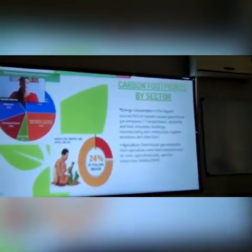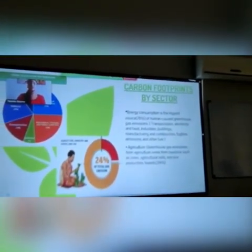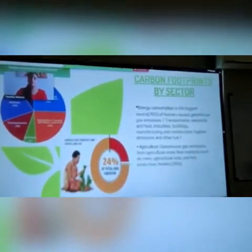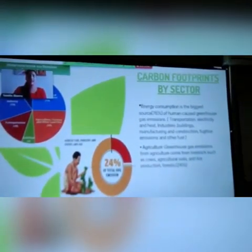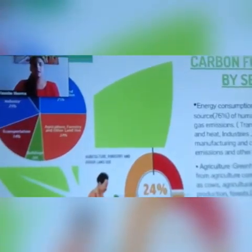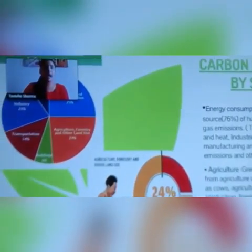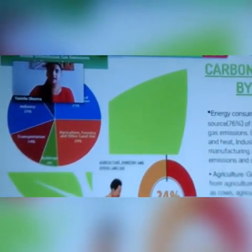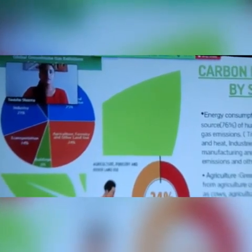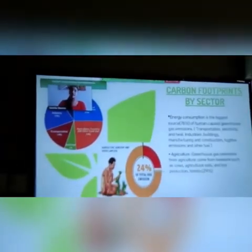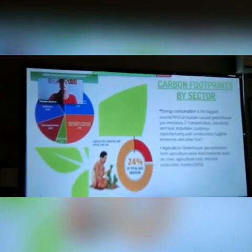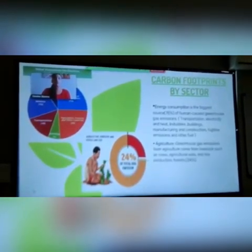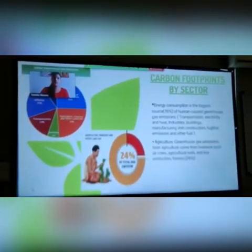If we go by sector, energy consumption is the biggest source of human-caused greenhouse gas emissions at 76%. This is followed by agriculture. Greenhouse gas emissions from agriculture come from livestock such as cows, from forests, and from other agricultural production, which in total is 24%.